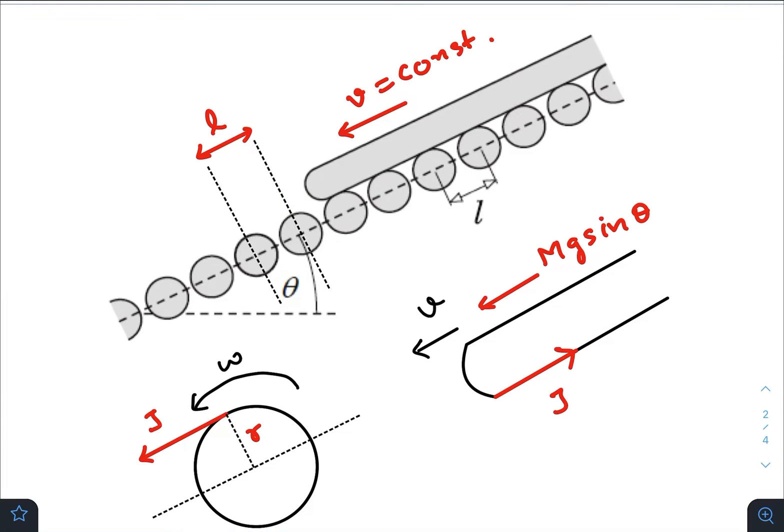So when steady speed is reached, the gravitational force is generally balanced by the impulsive force of all the adjacent rollers.